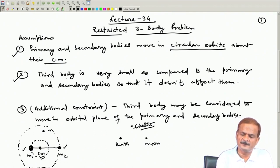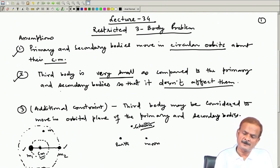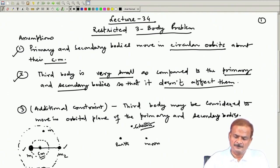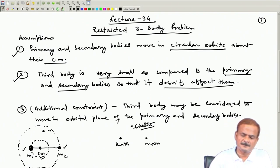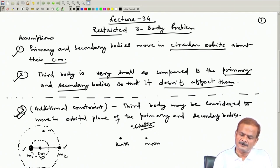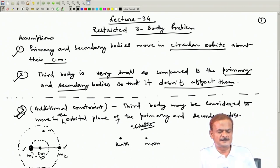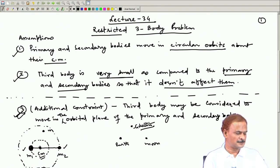So the second assumption is that the third body is so small that it does not affect the primary and secondary bodies. Additionally, one more optional constraint can be imposed: the third body may be considered to move in the orbital plane of the primary and the secondary bodies. This assumes planar motion, but it is not necessary — it is an additional constraint that you can implement if required.